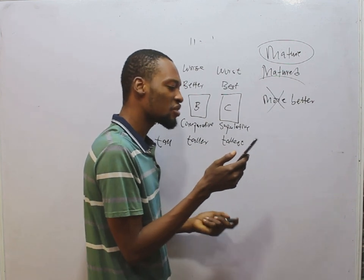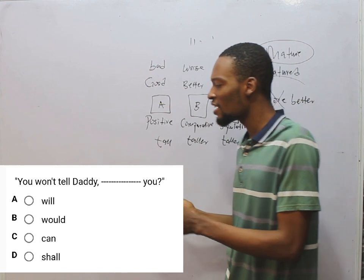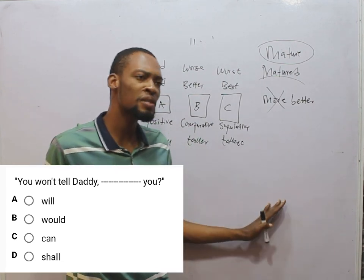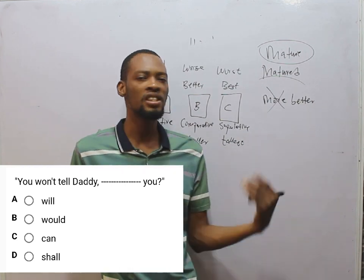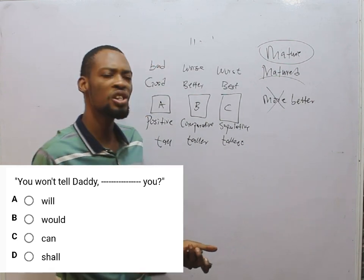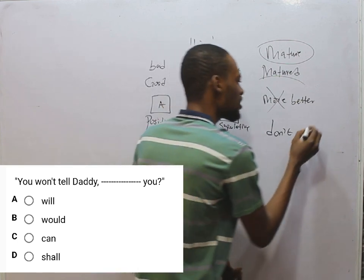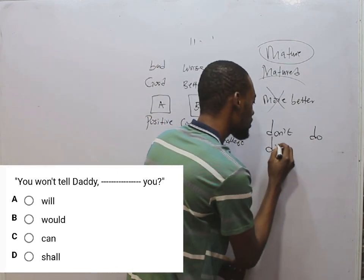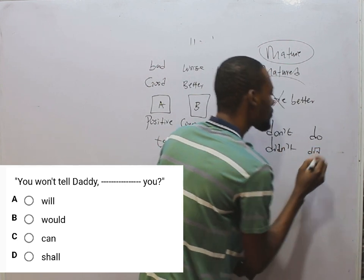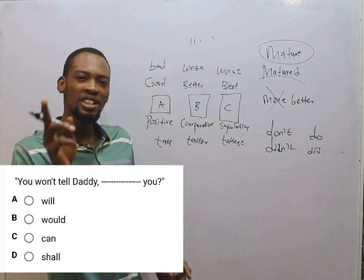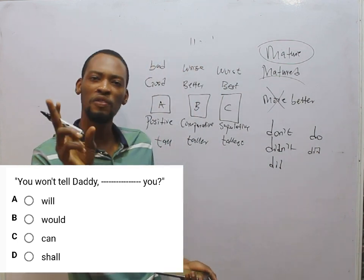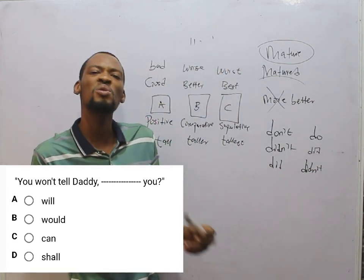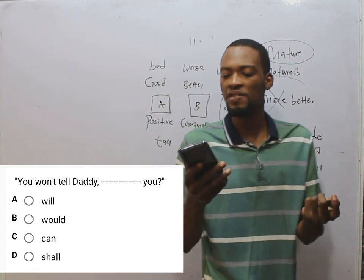You won't tell daddy dash dash you — this tests question tags. For question tags: a positive statement takes a negative tag, and a negative statement takes a positive tag. For example, you don't mean it — do you? You did not do it — did you? You did it — didn't you? In this case, you won't tell daddy is negative, so the question tag should be positive: will you? Option A is correct — you won't tell daddy, will you?